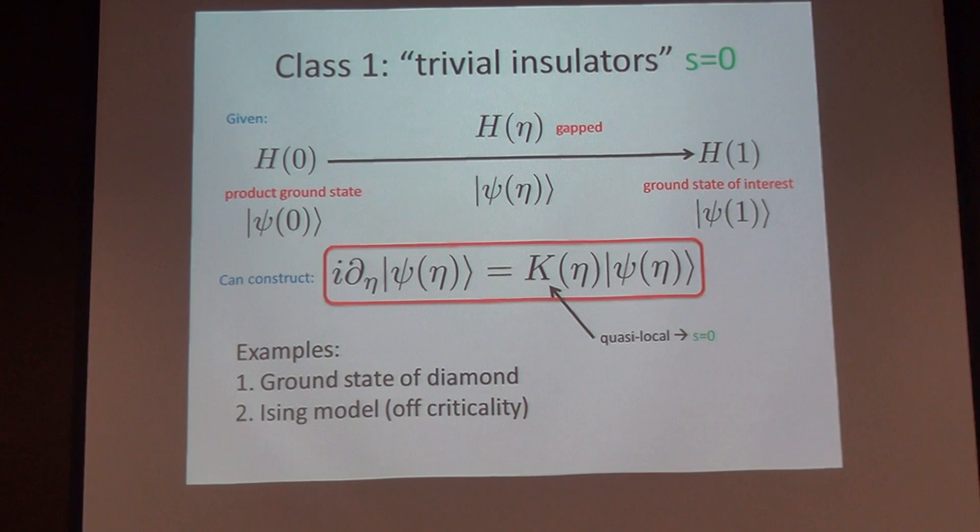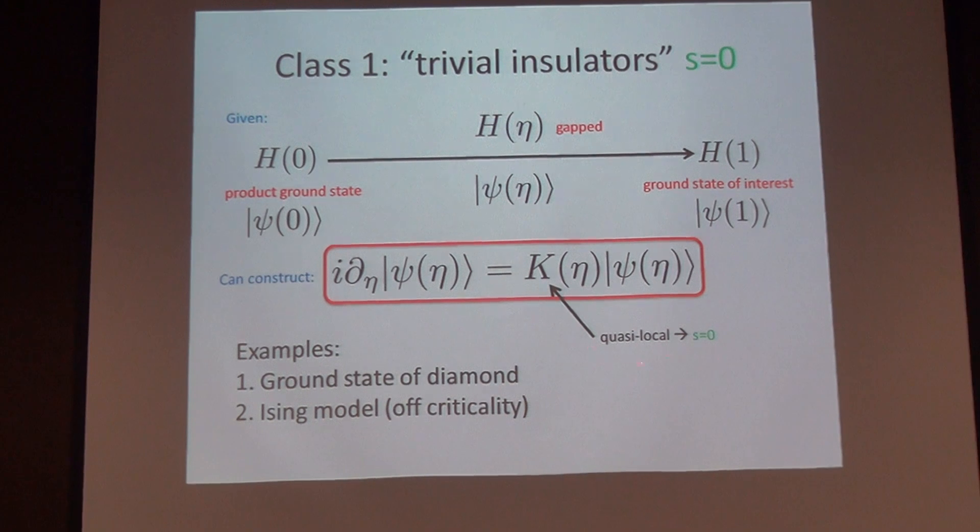Then what I claim is that we can construct a fictitious Hamiltonian which I call K of η, which is indeed quasi-local and which generates the time evolution as a function of η. If you think of this wave function ψ of 0 and ψ of 1 as being part of a family of wave functions ψ of η, and you think of η as like a time, then we can construct a quasi-local generator or Hamiltonian which generates time evolution. The job of this generator is to produce first-order perturbation theory—that's all it does. This matrix element over energy difference, that's the job of K.